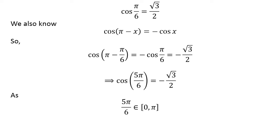As 5 pi upon 6 lies in the closed interval of 0 and pi, 5 pi upon 6 is the principal value of inverse cosine of minus square root of 3 upon 2.